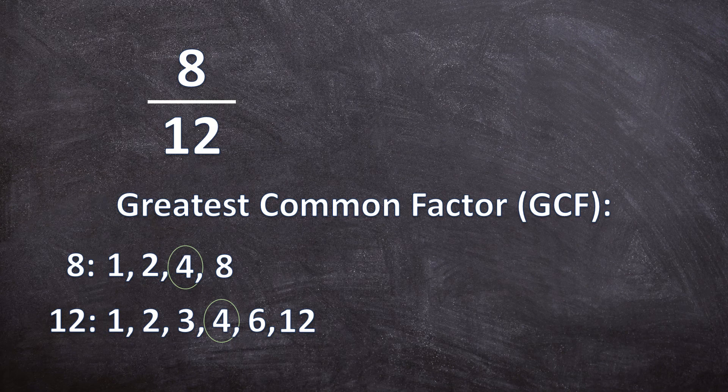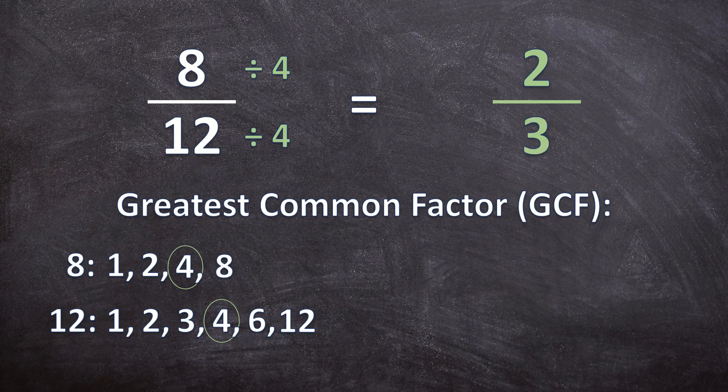So now we can go and divide the numerator and the denominator by four to get our simplified fraction. So eight divided by four is two, over 12 divided by four is three. So the simplified fraction for eight over 12 is two over three.